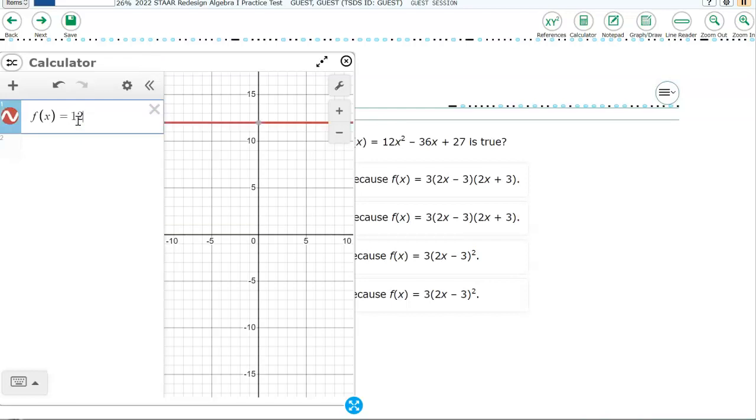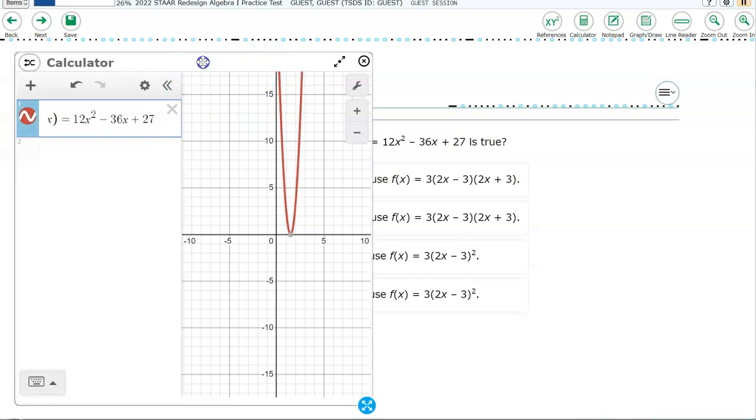And let's type in F of X equals and just type in this function. So 12 X squared. Shift 6 makes an exponent. Type your 2. Minus 36 X plus 27. All right. So now I've got four answer choices.